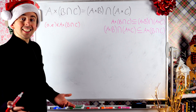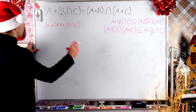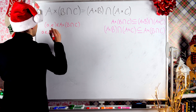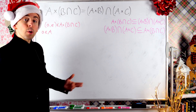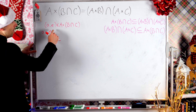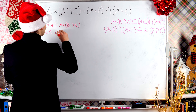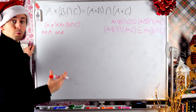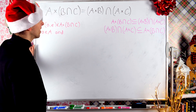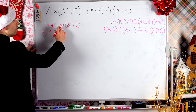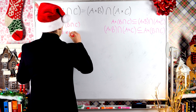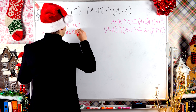I've called the first element little a because by definition of Cartesian product, little a has to belong to the set big A. The element on the right of the ordered pair I've called e for element. By definition of Cartesian product, this second element in the ordered pair must belong to the second set in the Cartesian product. So a is an element of big A, and the element e is in B intersect C — that is, e is an element of B intersect C.